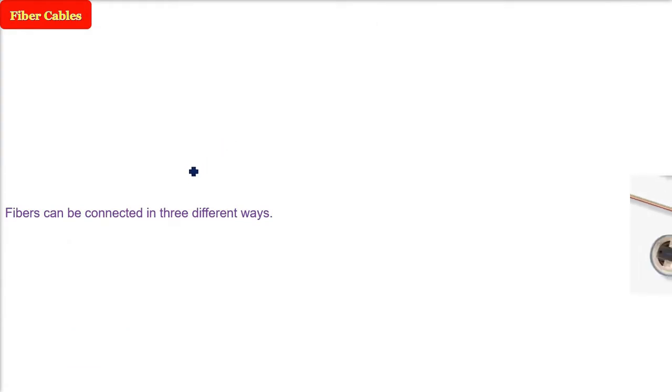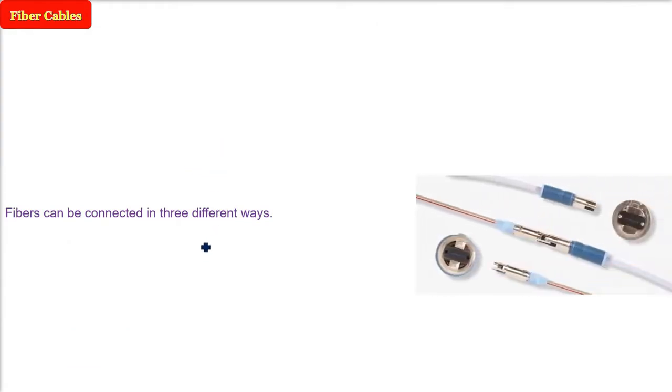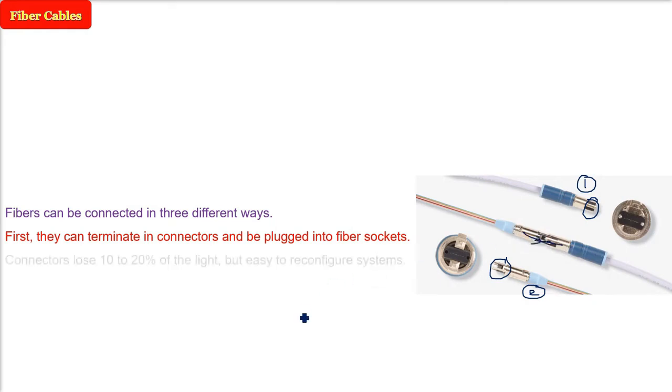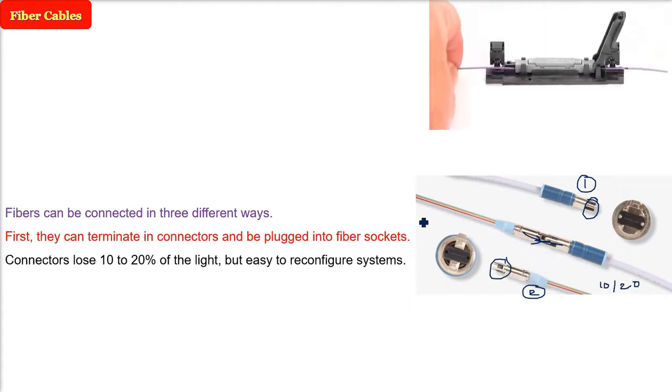Fibers can be connected in three different ways. The first you see in the picture, we can have connectors. They can terminate in connectors and that can be plugged into fiber sockets. This is the easiest way, but the connector will lose 10 to 20% of the light. This is very reconfiguring system, easy, but the loss is higher.